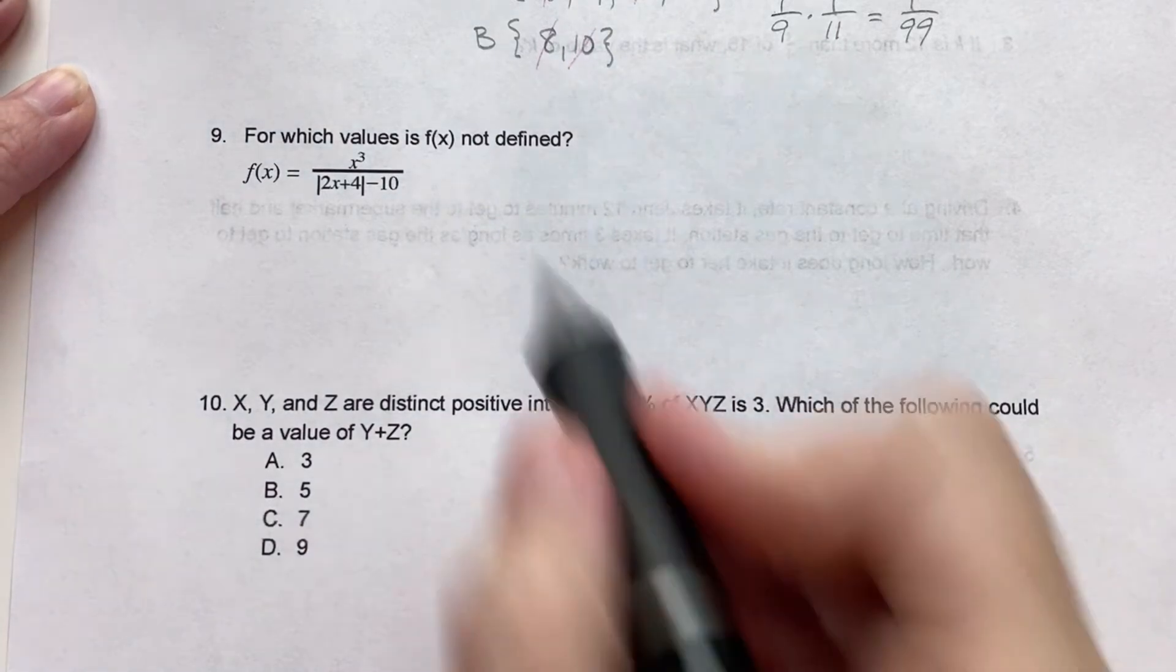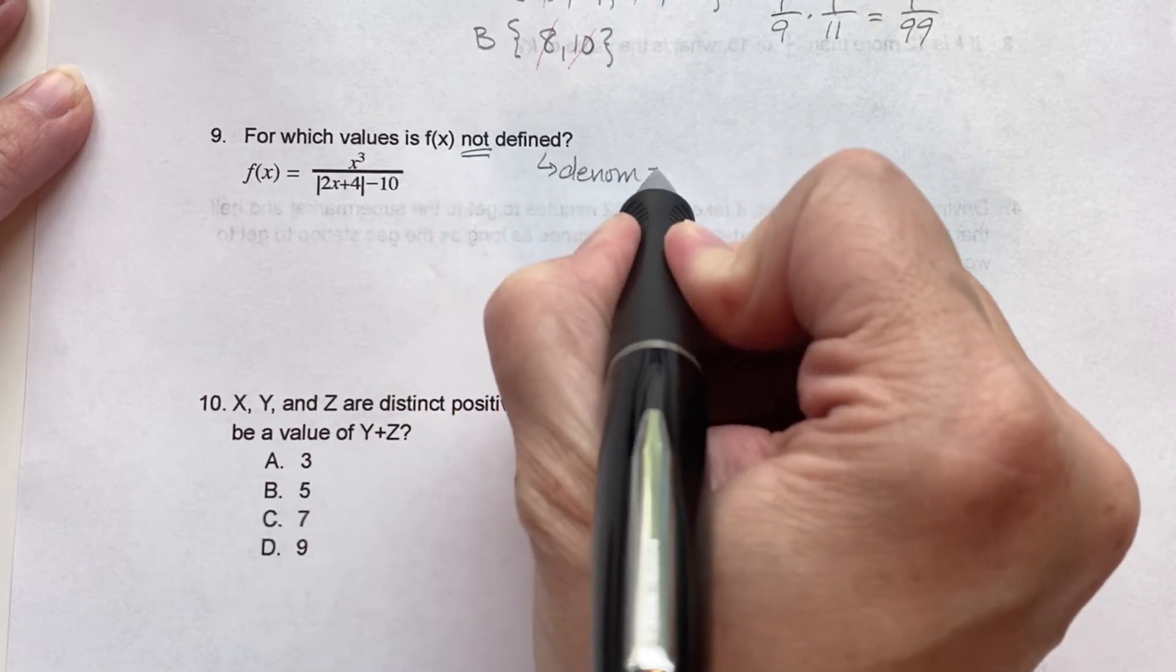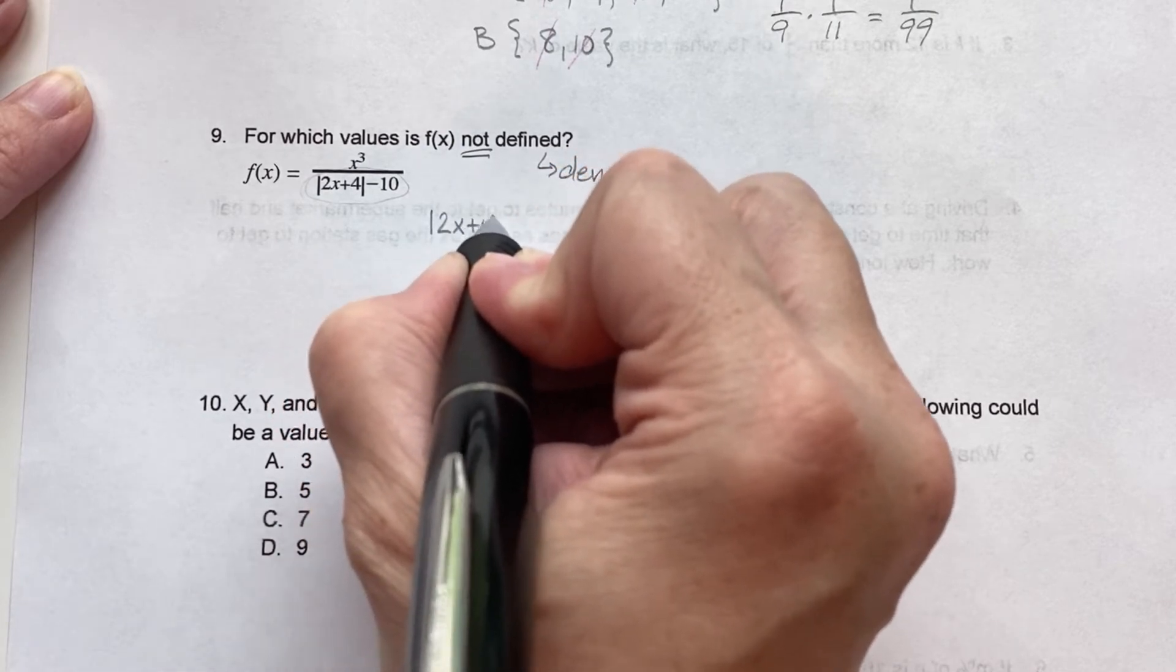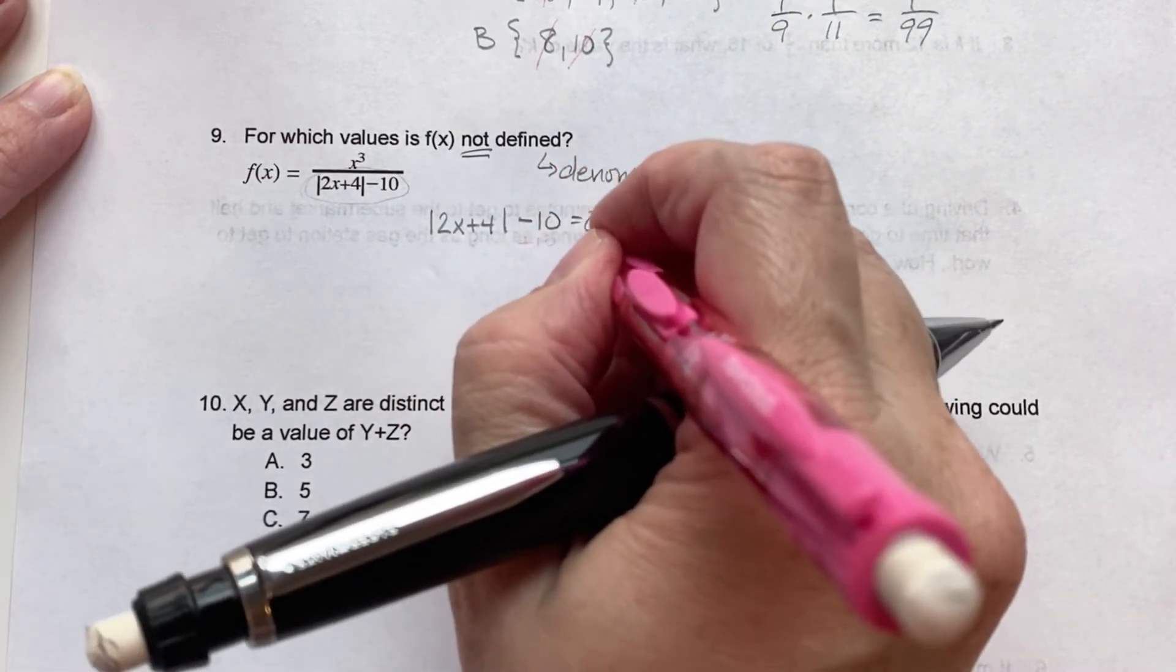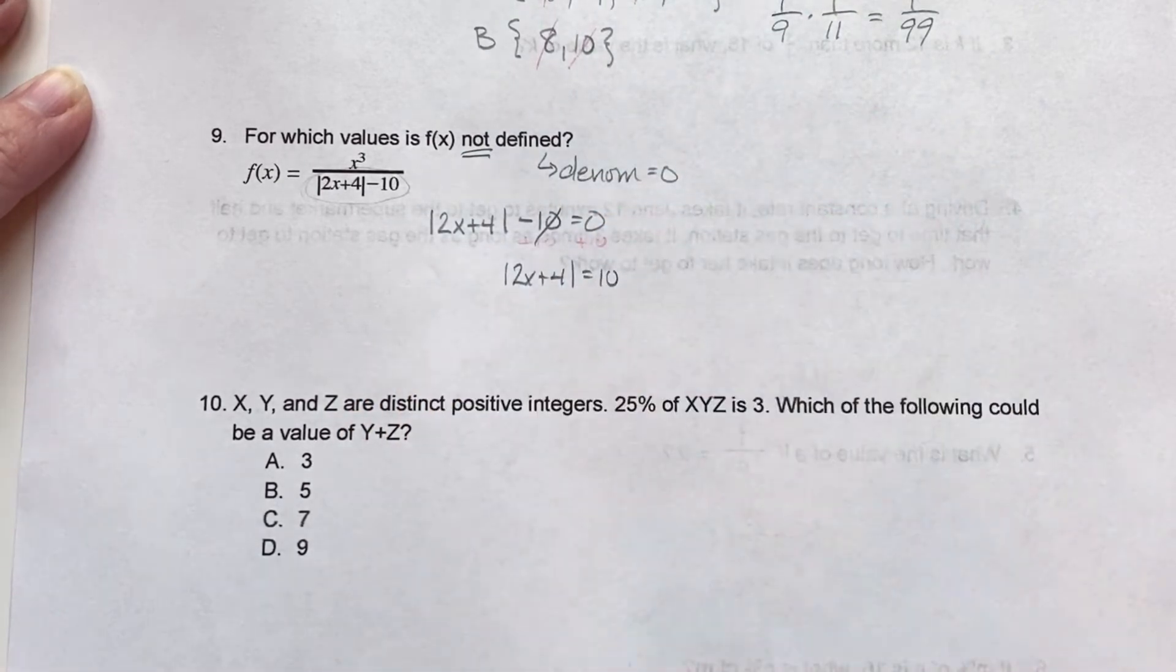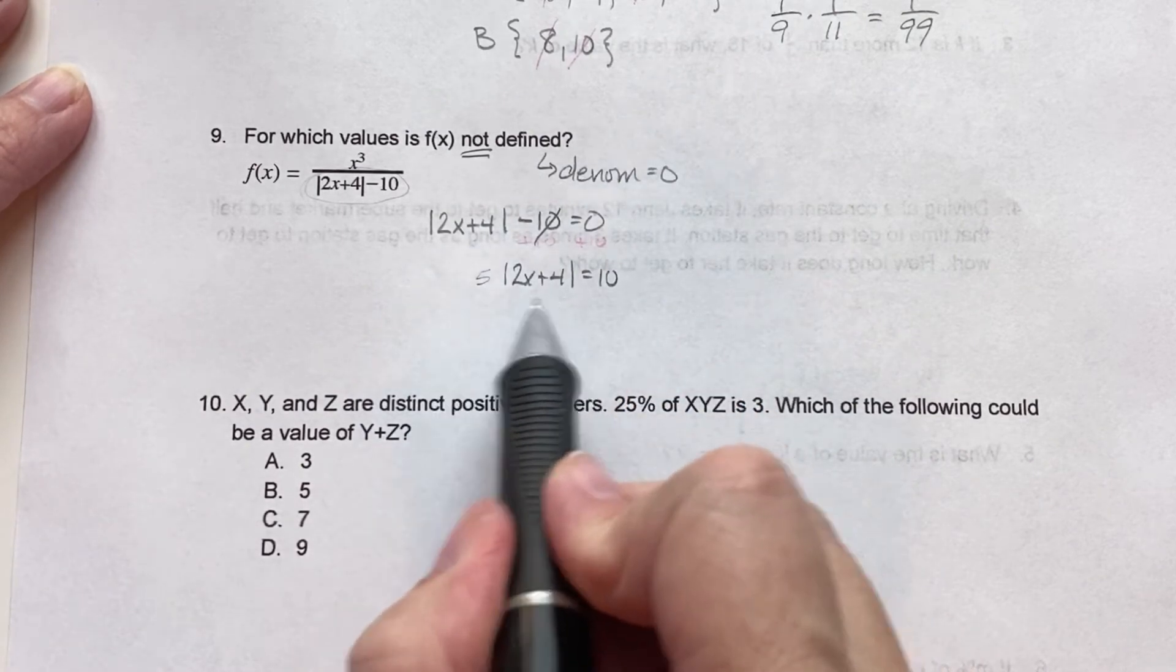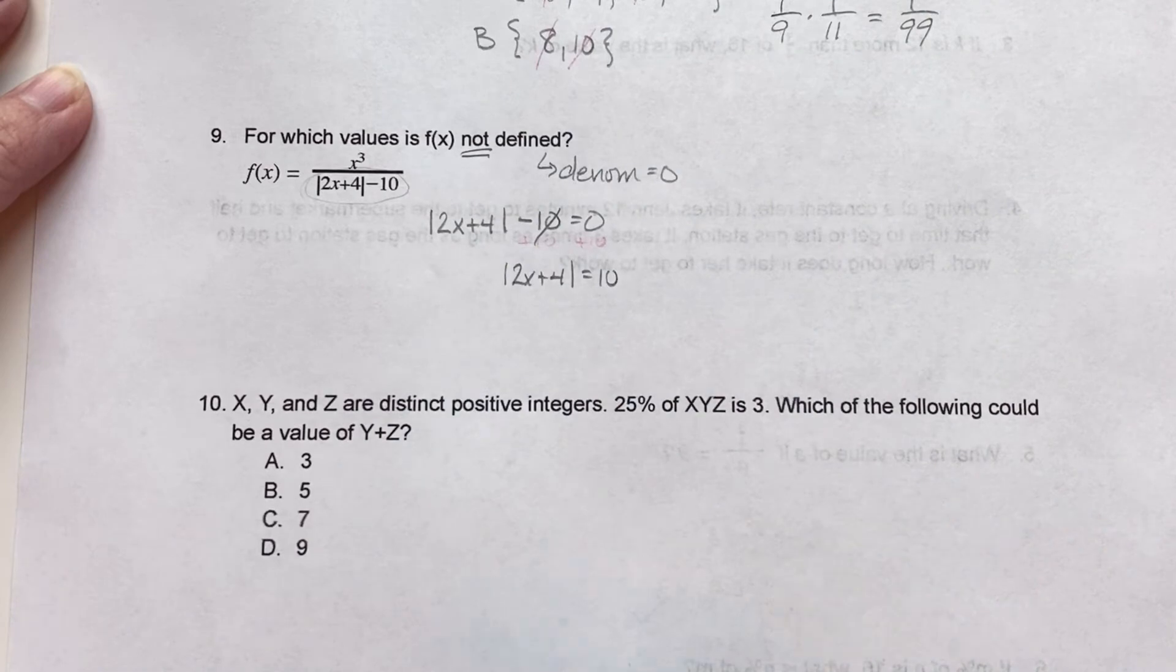Alright, for which values is f of x not defined? And remember, for not defined means the denominator is equal to 0. So we're going to set this whole denominator equal to 0 and solve for x. So first we get absolute value 2x plus 4 minus 10 equals 0. Add the 10 over. At this point, the absolute value is by itself. Now if you had something out in front, like let's say we had a 5 out in front, you would have to divide both sides by 5 first.